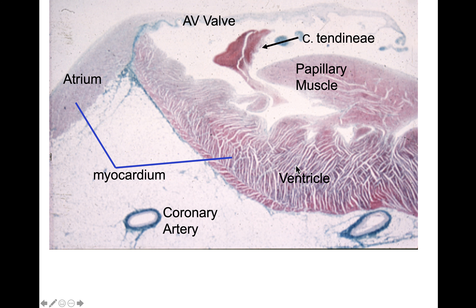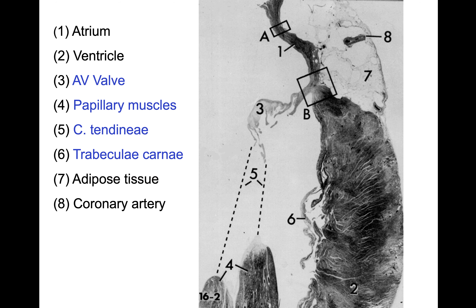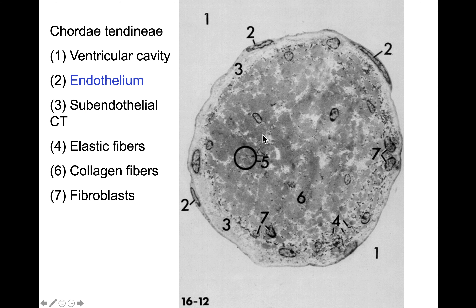This slide shows the endocardium, myocardium, and epicardium layers. We can see papillary muscles, valves, and the chordae tendineae extending within the heart chambers. The chordae tendineae, viewed from outside, have an endothelium on the surface and connective tissue — elastic and collagen fibers — in the middle.